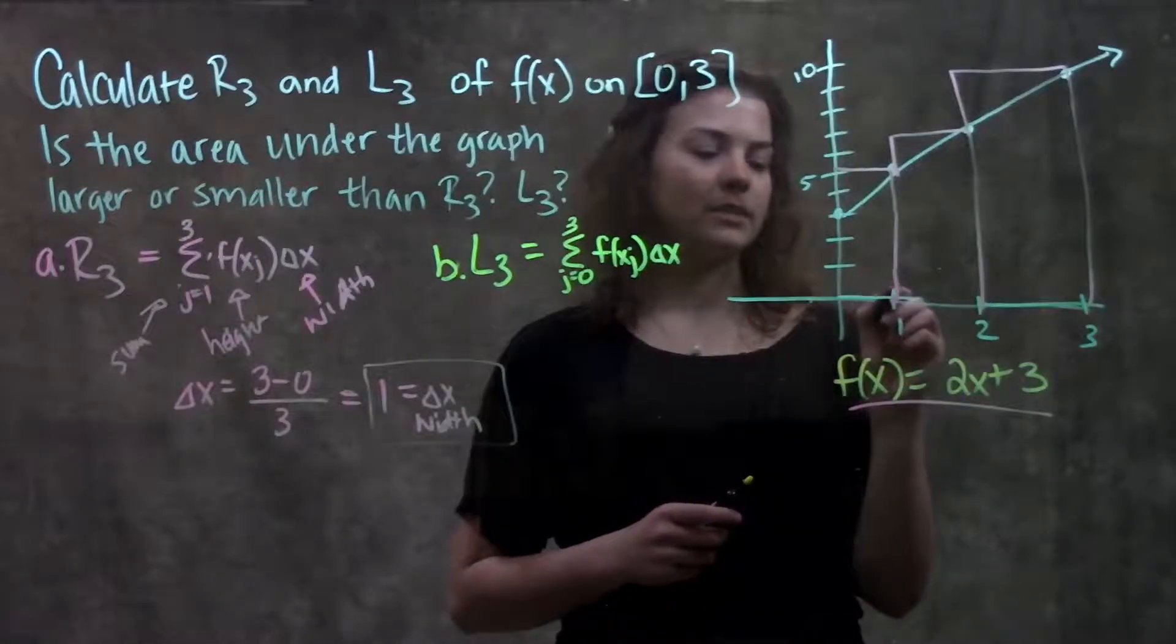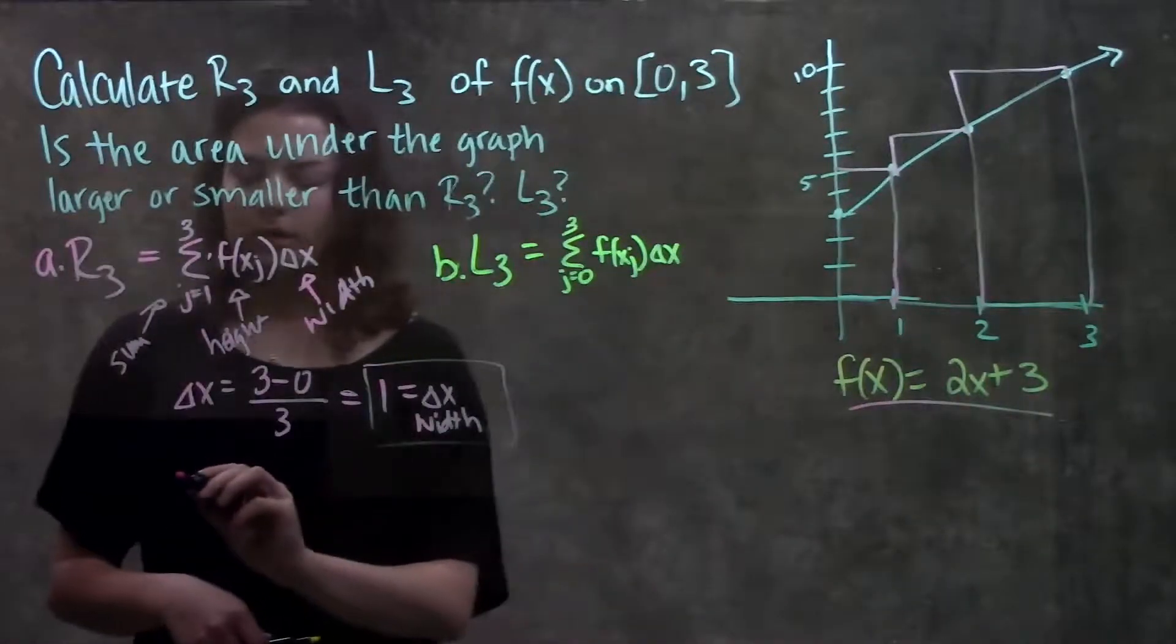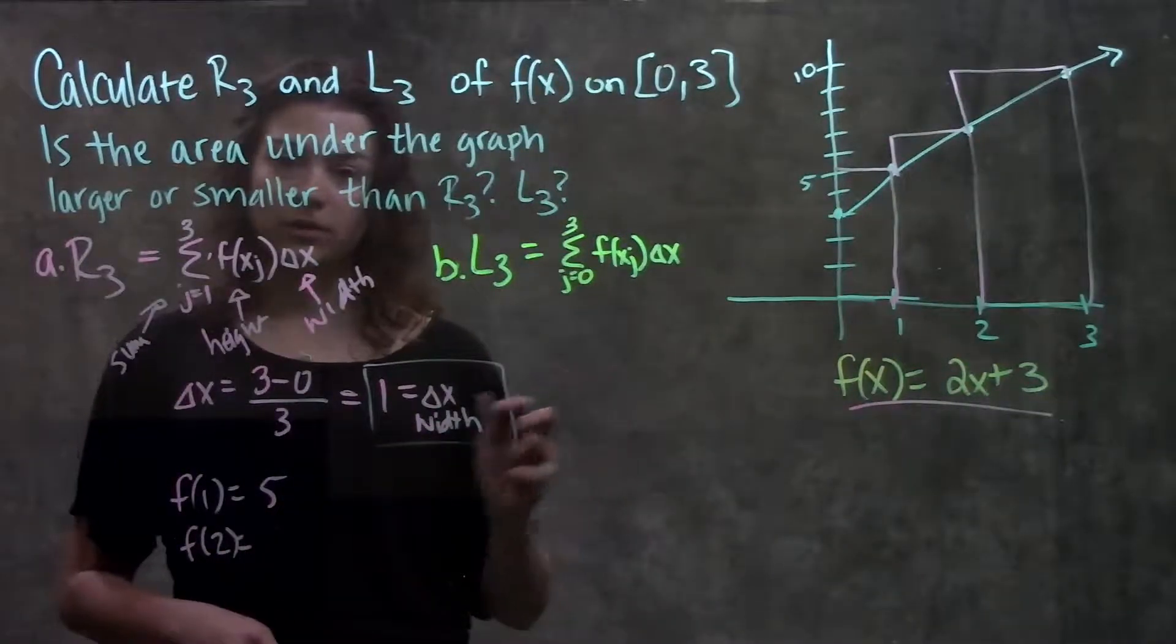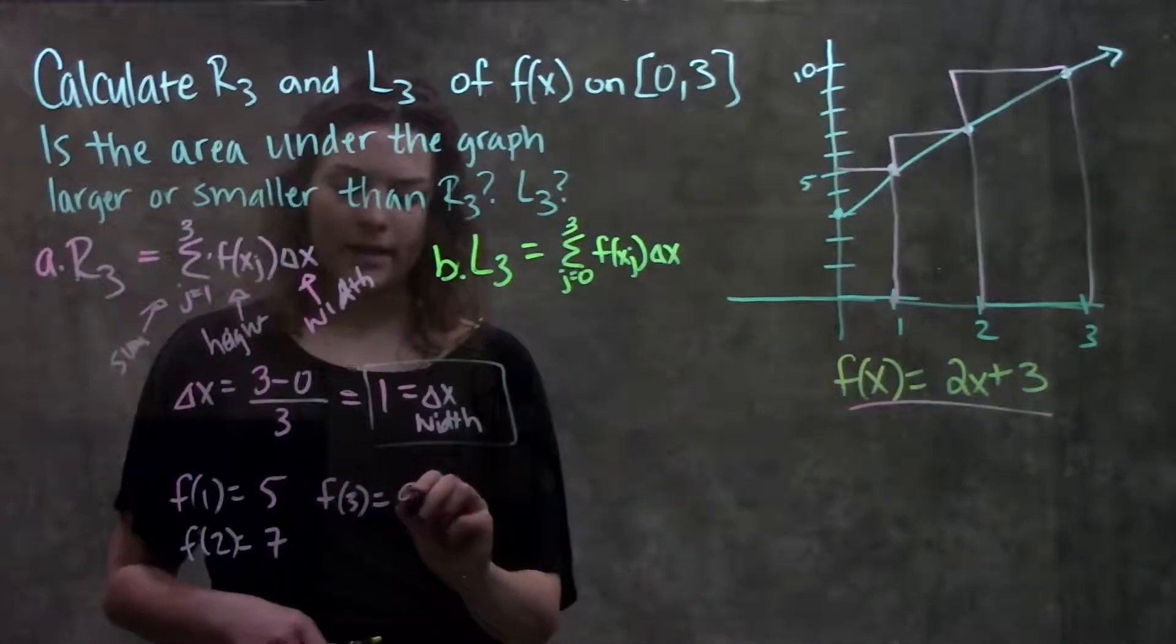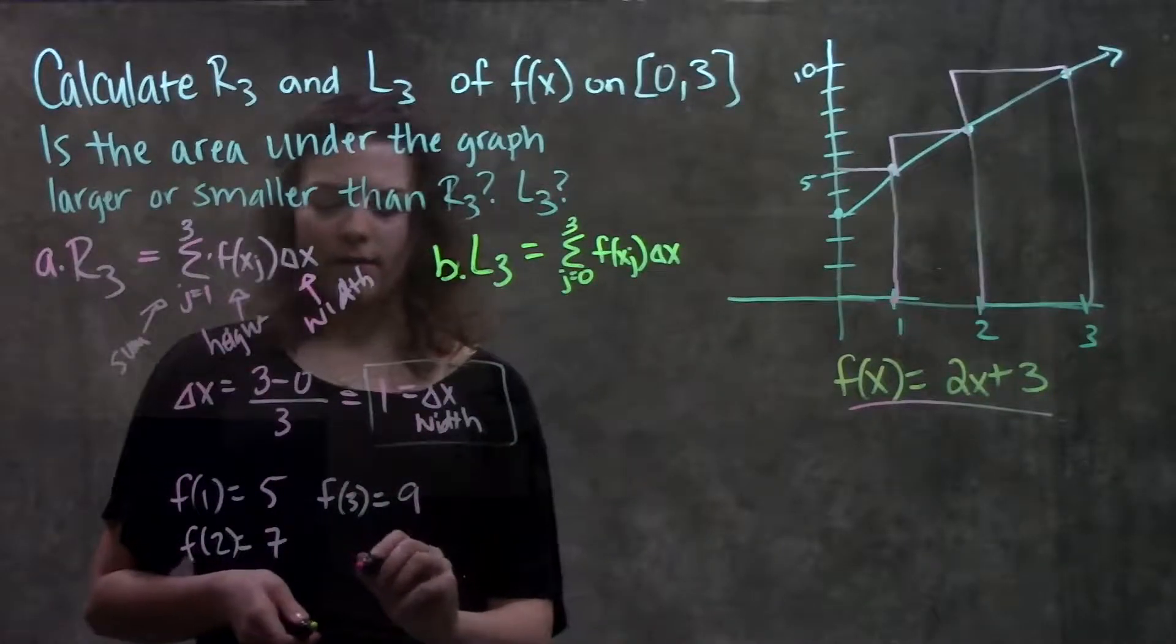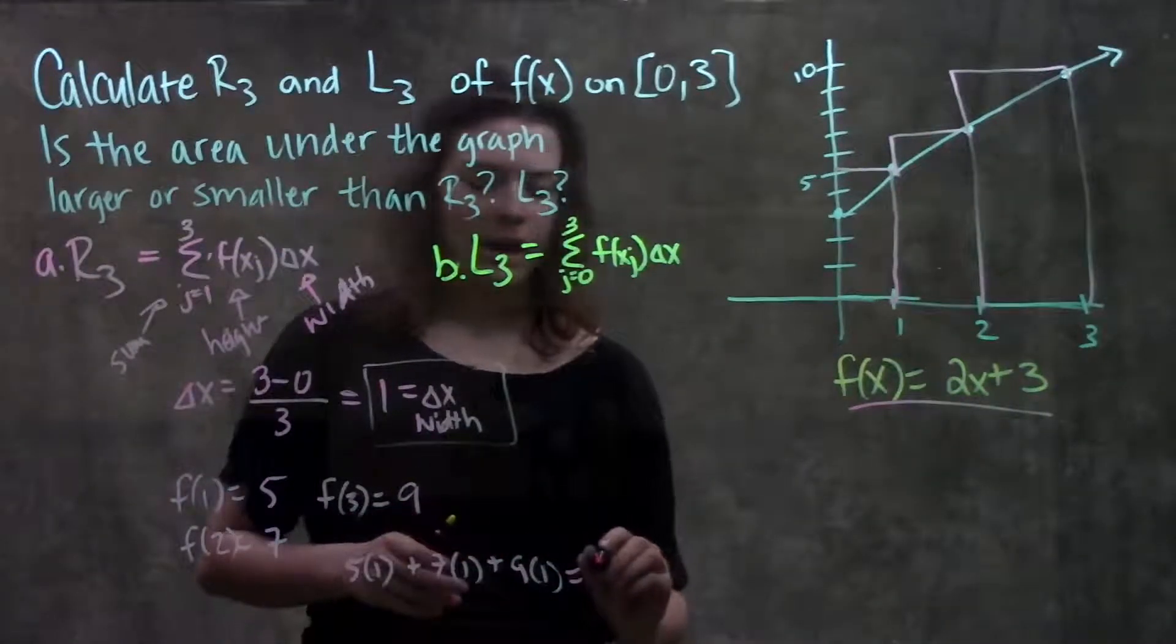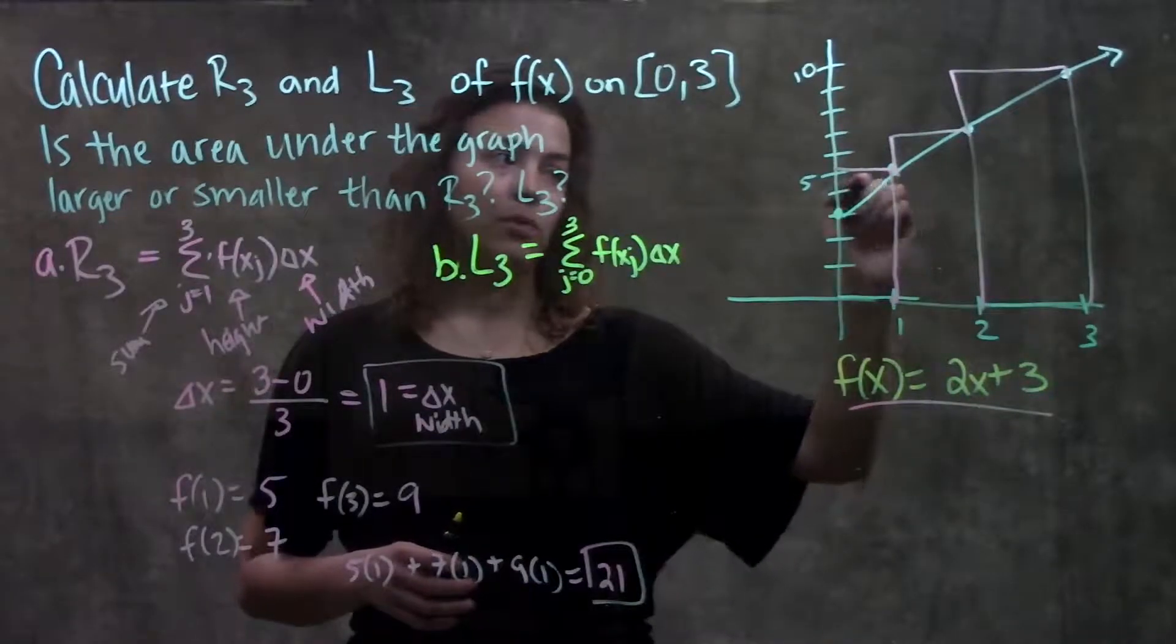Now to find what my y values are at each of these points, I can just look at my x value and plug it into my function. For this first rectangle, my x value is 1, so I find what f(1) is. f(1), I plug in 1 for x, I get 2 plus 3, that's 5. Do the same thing for my next rectangle, my x value is 2. When I plug 2 into the function I get 7. And for my third rectangle my x value is 3, which gives me 9. I'm trying to find the area of each rectangle and add it together, so I can find what 5 times 1 plus 7 times 1 plus 9 times 1 is. This is each of my heights multiplied by the width and adding it together. When I add all this together I get 21. So this is the area I approximated under my function using my right endpoint rectangles.